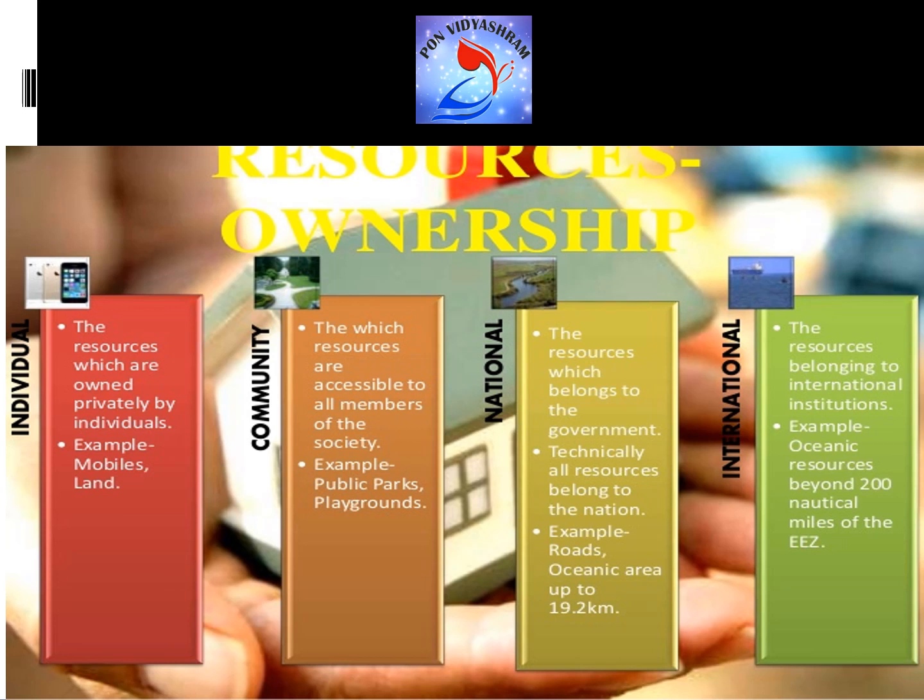The next classification is on the basis of ownership: individual, community, national, and international resources. Individual resources are owned privately — the individual has complete control, like a house or land, and any decision regarding them is taken by the individual alone. Community resources are those to which all members of a community have access, like public parks, playgrounds, and picnic spots. National resources belong to the government, which has legal power to acquire resources within the nation — for example, if the government needs land for expanding the railway or road network, it can take it from individuals for the betterment of the nation.